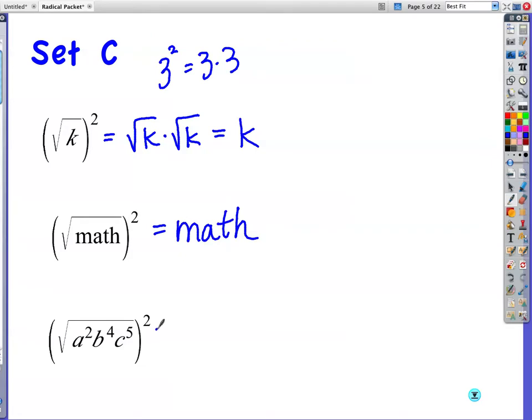The square root of math squared, your square cancels out your square root. Math. It's the same as the previous. Big scary stuff inside. But I'm squaring it. All that it's doing is start cancelling out your radical. So my answer is, what's underneath? Notice how what's underneath the radical has not changed. I still have an a squared and b to the fourth, c to the fifth. All this little 2 did was take care of the radical.